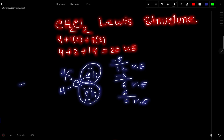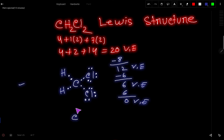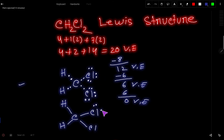Carbon has also achieved its octet, and both hydrogens have achieved their duet. So let us delete the circles. This is the Lewis dot structure for CH2Cl2, or dichloromethane. We can also express this structure by writing bond pairs as dashes and keeping the lone pairs unchanged. This is the Lewis dot structure for CH2Cl2. Thank you for watching this video.